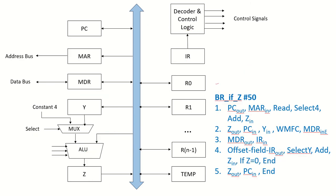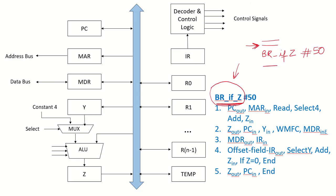What if there is a condition? Consider an instruction 'branch if Z', meaning if the result of the previous operation was zero, then only branch. We have this conditional branch with an offset of 50. The target address is PC plus the offset — in this case 50 — but only if the zero flag is high.